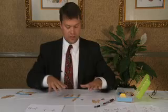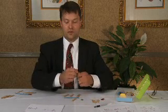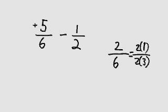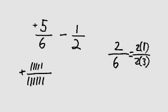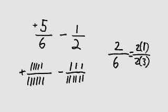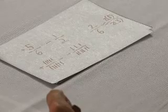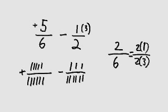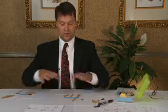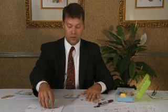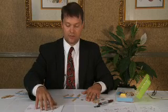Ideally, once the child learns fluently in the concrete stage, the next step is pictorial. For five-sixths minus one-half, we teach the child to draw a mat like the popsicle sticks and go through the same process — numerator, denominator, numerator, denominator — pictorially. What we're hoping they eventually do is learn abstractly: analyze the denominator, realize the least common multiple, and understand they need three more sets in order to start the subtraction process. Concrete is a bridge to pictorial, and then to abstract equation solving.